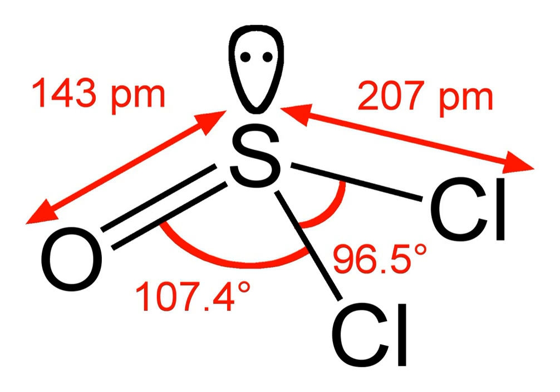4Li plus 2SOCl2 yields 4LiCl plus S plus SO2. These non-rechargeable batteries have many advantages over other forms of lithium batteries such as high energy density, a wide operational temperature range and long storage and operational lifespans. However, their high cost and safety concerns have limited their use.